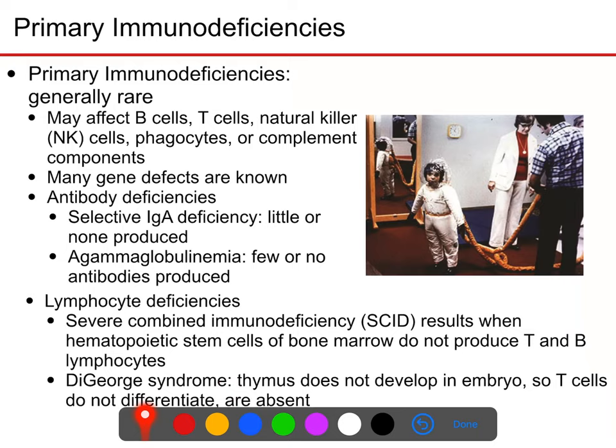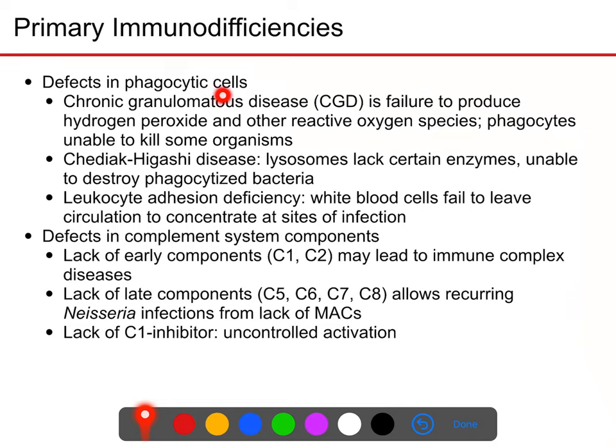In DiGeorge syndrome, the thymus does not develop in the embryo, so T cells basically don't differentiate. You can also have defects in phagocytic cells: chronic granulomatous disease (CGD) means you don't produce hydrogen peroxide, which is one of the main things neutrophils use to destroy cells — it's a component of neutrophil granules and the natural killer cell death package. In leukocyte adhesion deficiency, white blood cells don't stick to capillary walls during inflammation, so they don't undergo diapedesis and extravasation, leaving you vulnerable to diseases of the tissues.